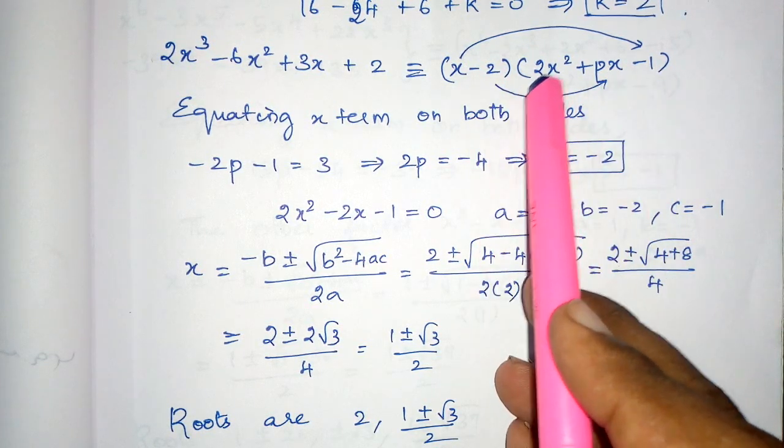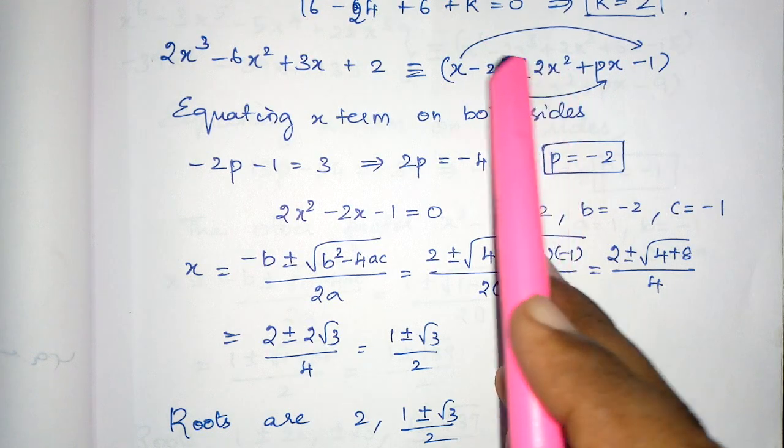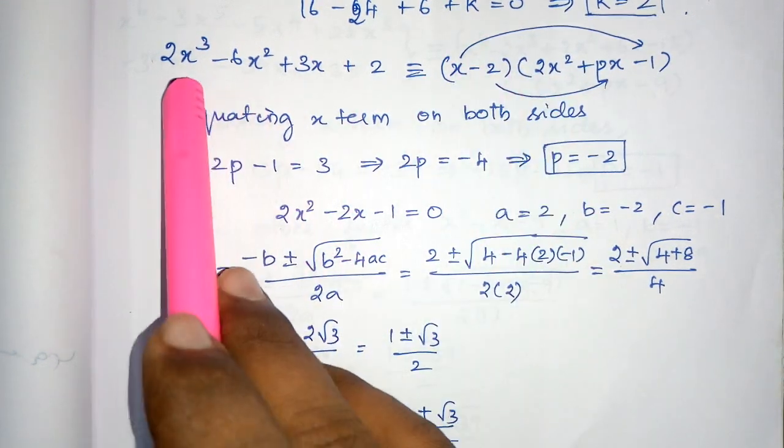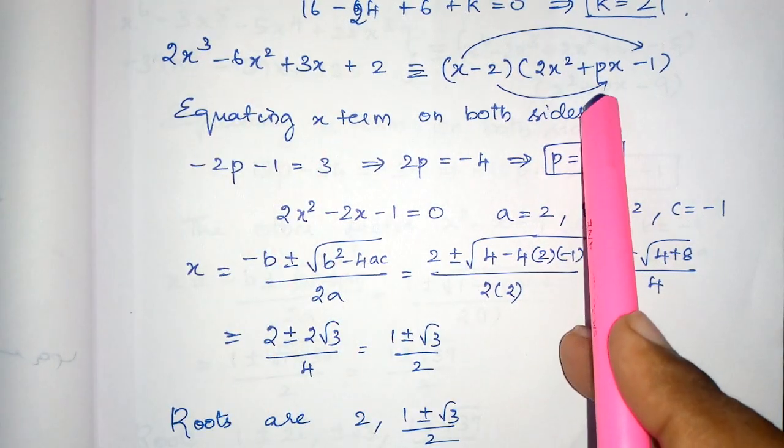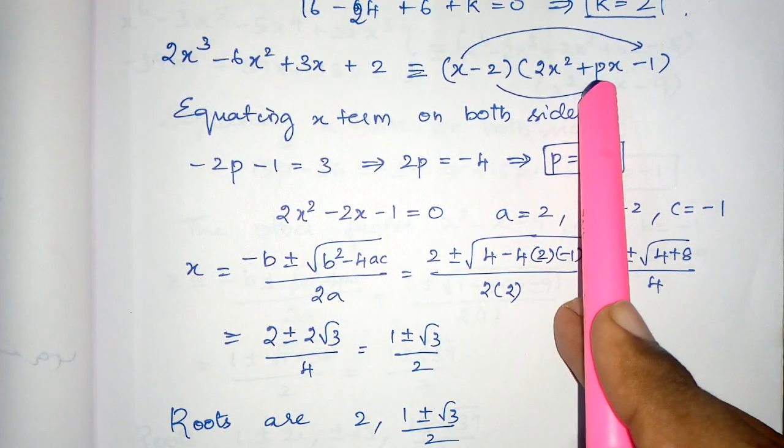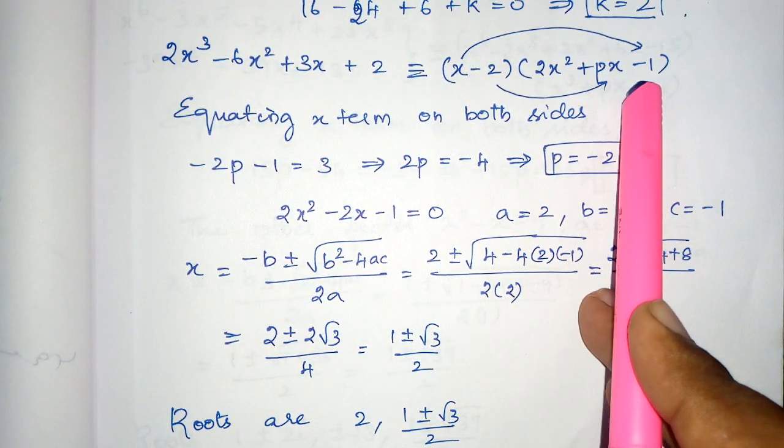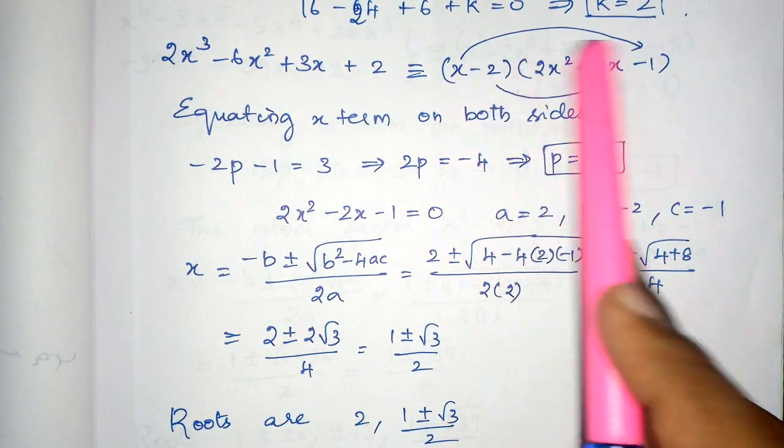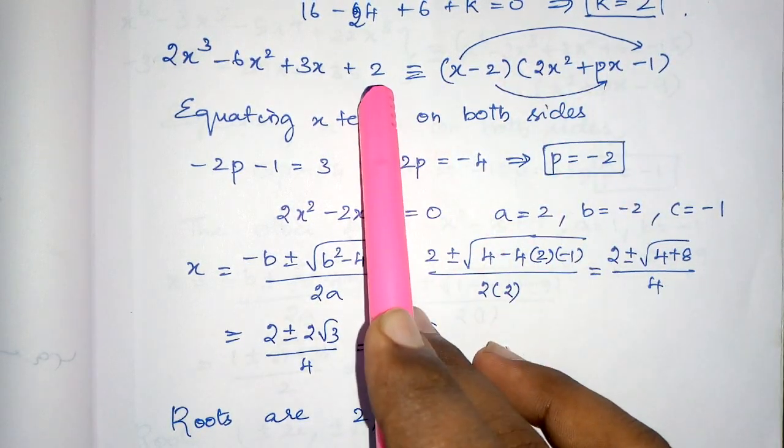So, I have to take this term as 2x square. Then only x into 2x square will become 2x cube. The second term is still unknown. So, plus px. And third term is supposed to be taken as minus 1. Then only minus 2 into minus 1 is 2.